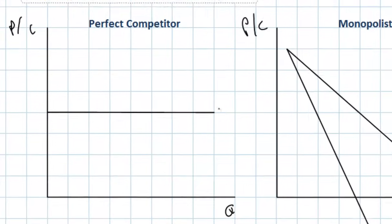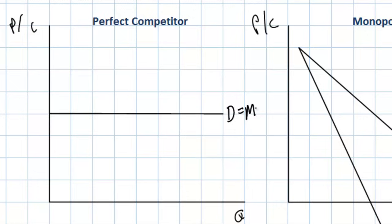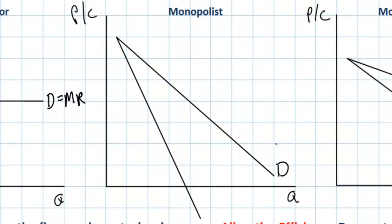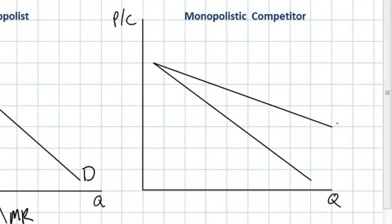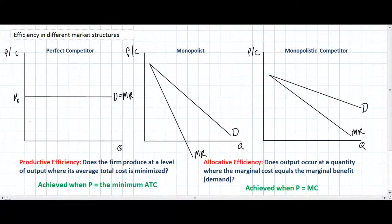In the perfectly competitive market the demand curve corresponds with marginal revenue, determined by the market price across hundreds or thousands of identical firms. The monopolist's downward-sloping demand has a marginal revenue curve lying below it, since the firm must lower its price to sell additional units. The monopolistic competitor looks similar to the monopolist but demand is more elastic. We're assuming each of these firms faces similar costs, holding all else equal when determining allocative or productive efficiency.